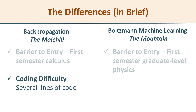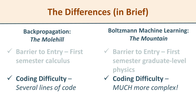Another differentiating factor in the barriers to entry is that the backprop code is pretty simple. In fact, if you like to write nice tight code, you can get that down to just a few lines. Whereas if you're working the Boltzmann machine contrastive divergence algorithm, that's a much more complex algorithm and it takes a lot more code.